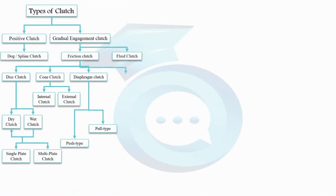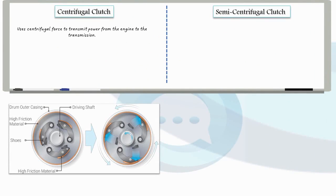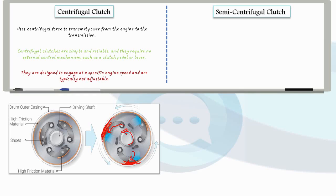Now next, we have centrifugal and semi-centrifugal clutch. Let's discuss the centrifugal clutch first. It utilizes centrifugal force to engage and disengage power transmission. Commonly found in small engines such as go-karts and minibikes, these types feature a clutch drum and clutch shoes. The clutch drum is attached to the engine output shaft and clutch shoes are attached to the transmission input shaft. As the engine speed increases, the centrifugal force causes the shoes to make contact with the drum enabling power transmission. The centrifugal clutches are simple and reliable and they require no external control mechanism such as a clutch pedal or lever. They are designed to engage at a specific engine speed and are typically not adjustable. They are also limited in their ability to handle high torque loads which makes them unsuitable for use in large engines or vehicles that require high torque output.